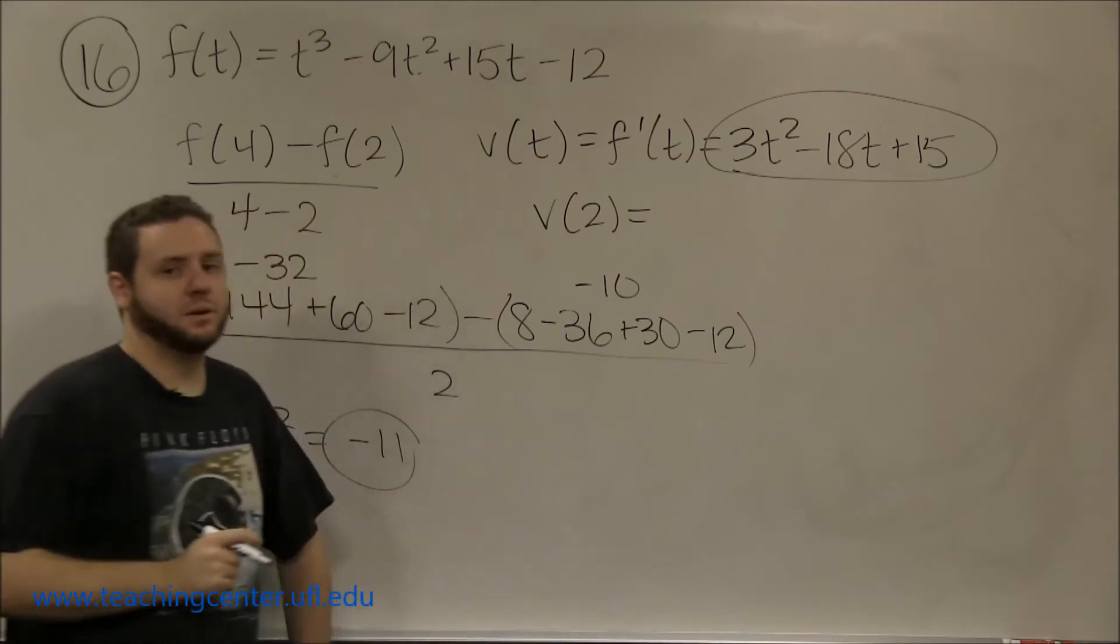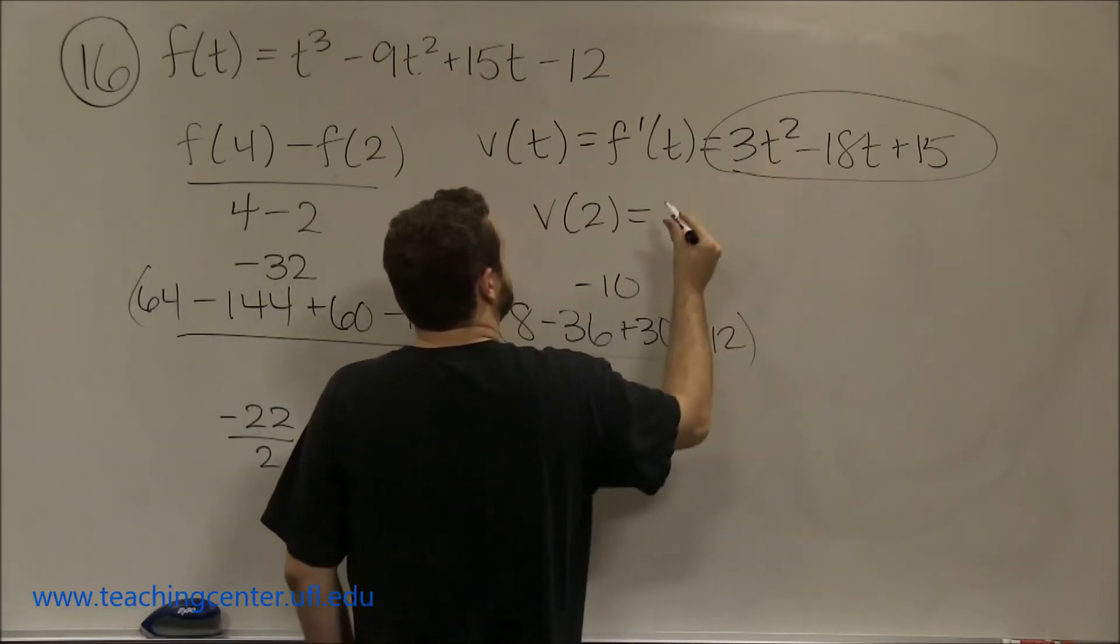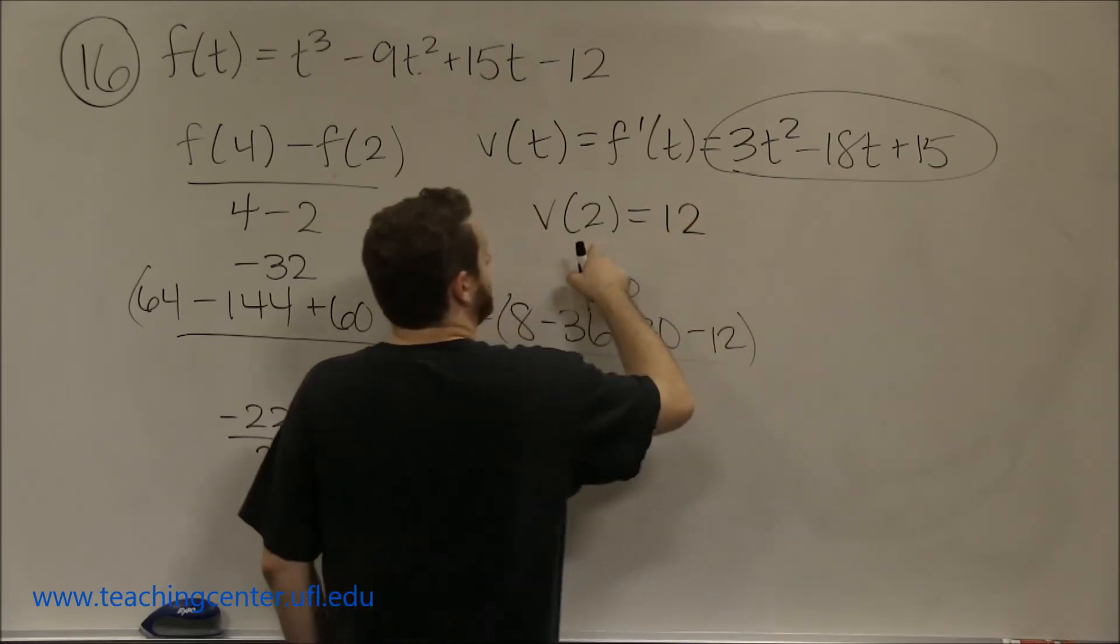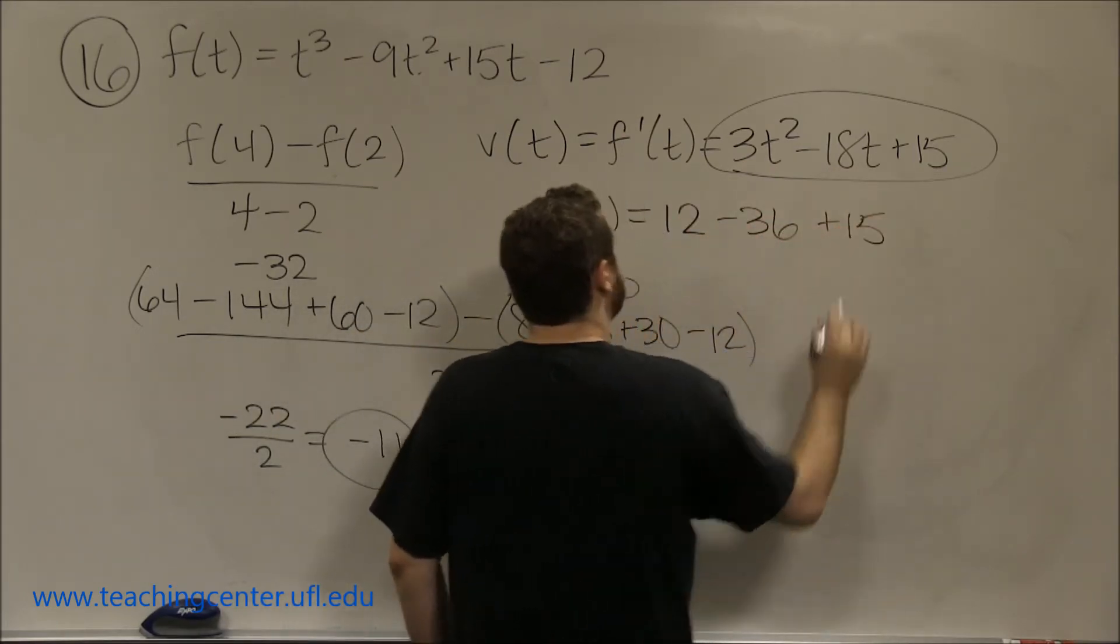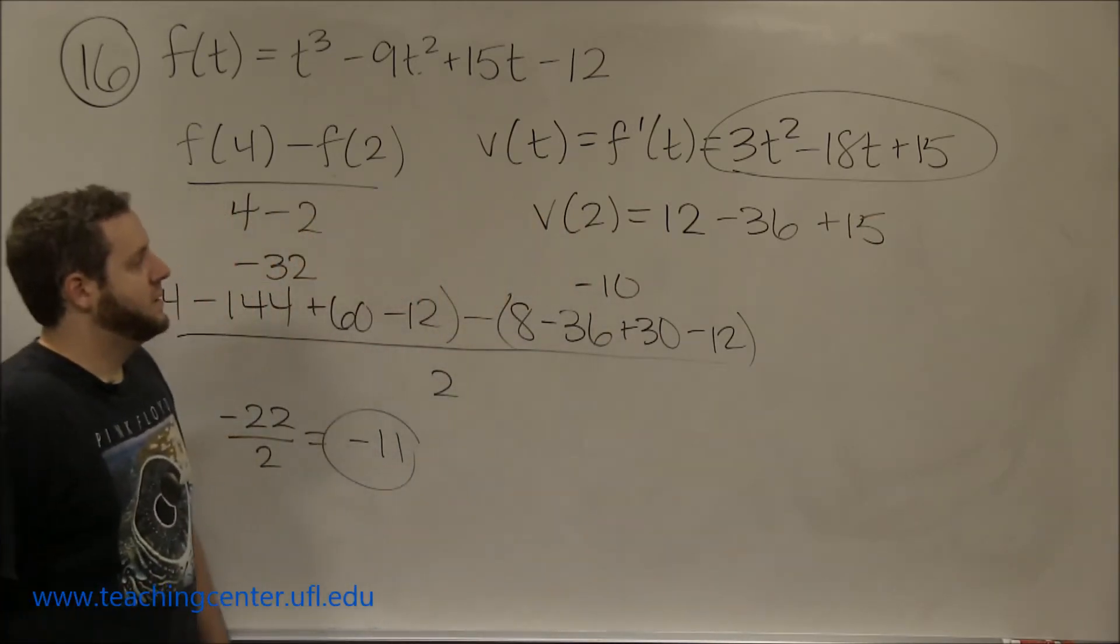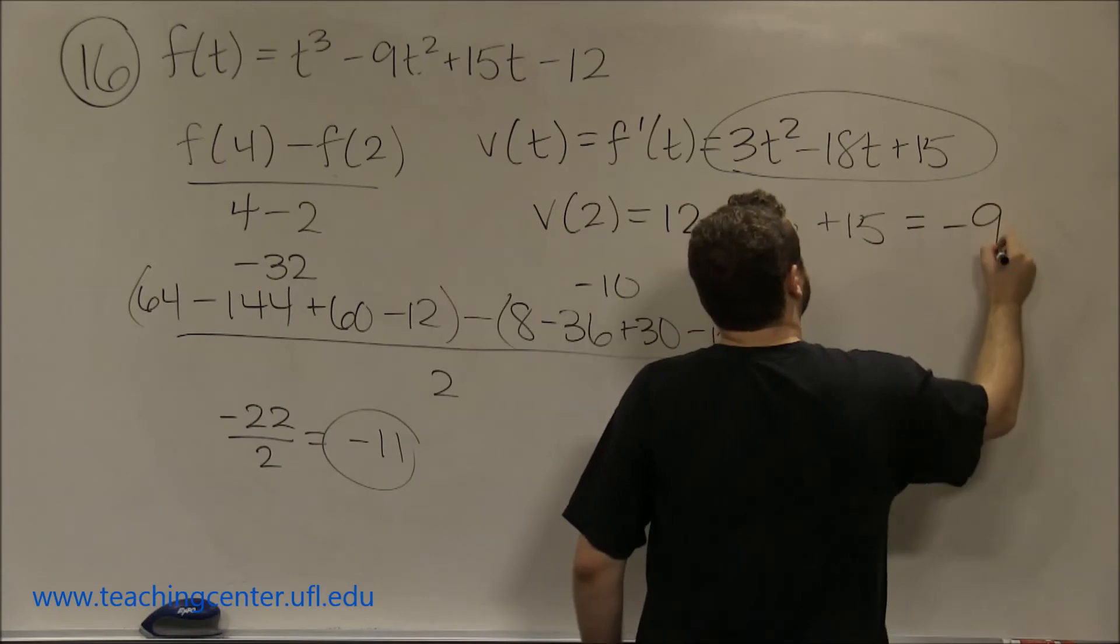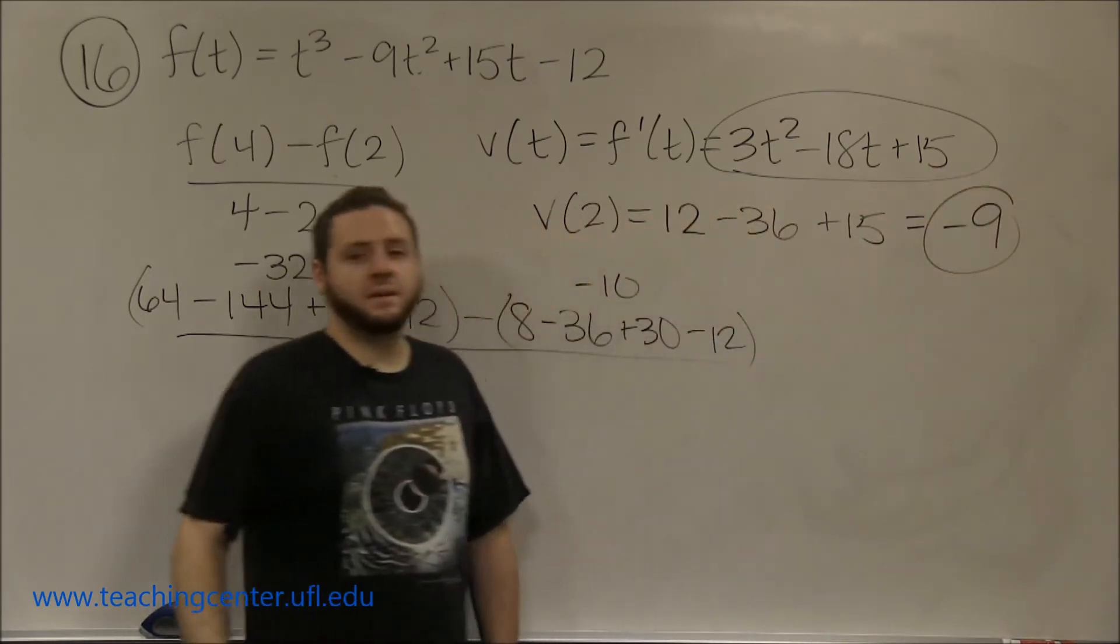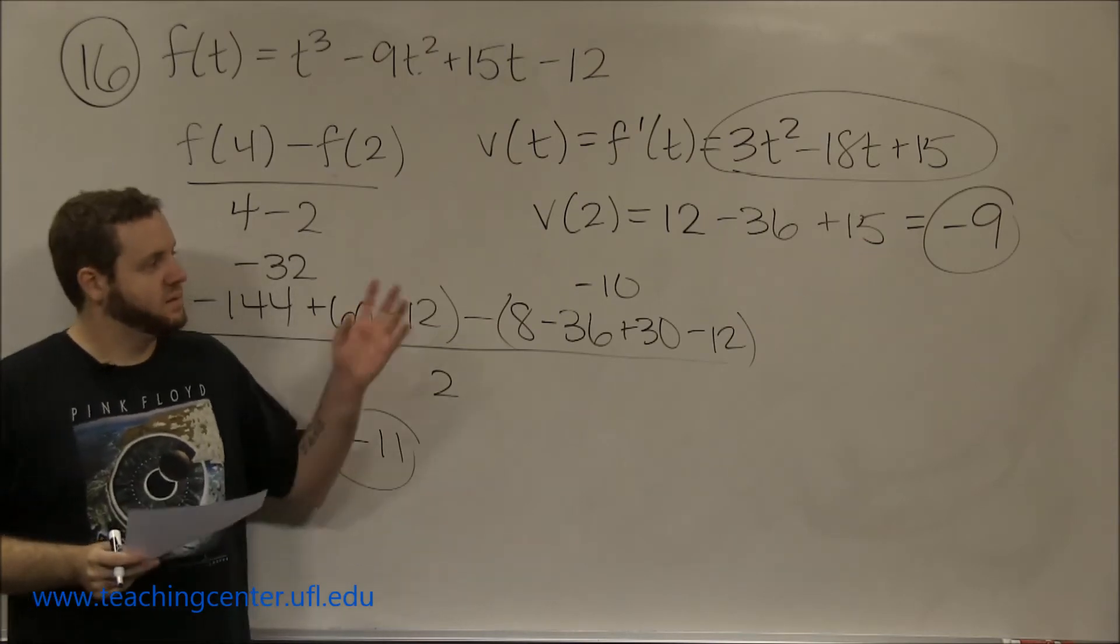That's just plugging 2 right in. Here we get 2 squared which is 4, times 3 is 12, 18 times 2 is minus 36, plus 15. So we get negative 24 plus 15, which is negative 9. The answer to part c, the instantaneous rate of change at 2 seconds, is negative 9.